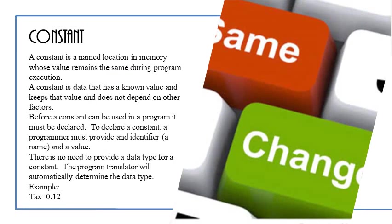Now, what are constants? Like the name says, it remains the same. It is a named location in memory, whose value will remain the same during your program execution. The constant is data that is a known value and keeps the value, and does not depend on other factors. Before a constant can be used in a program, it must be declared.